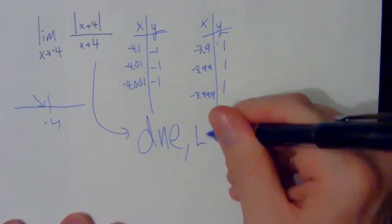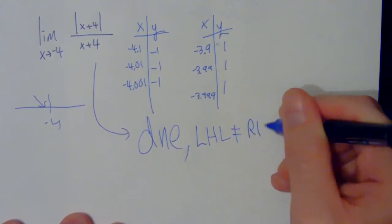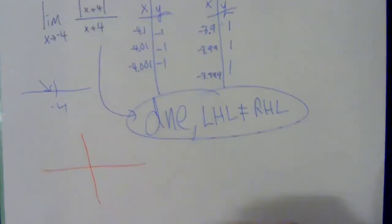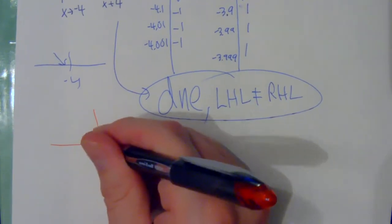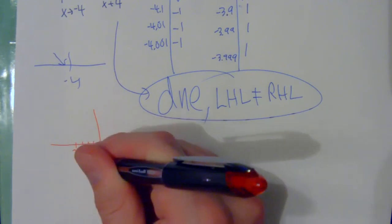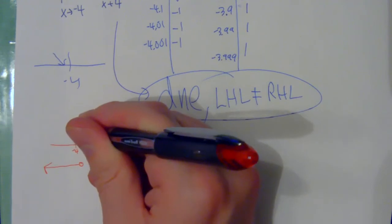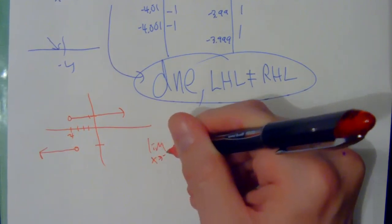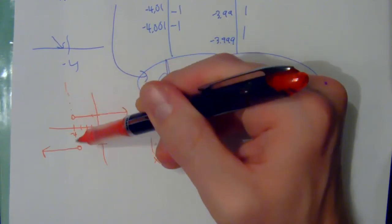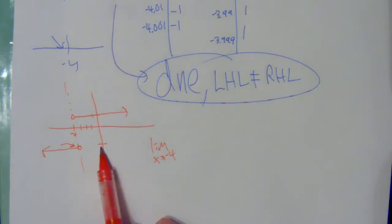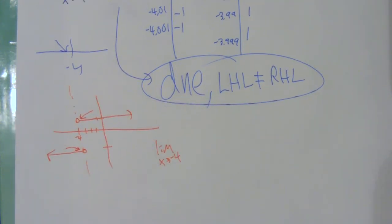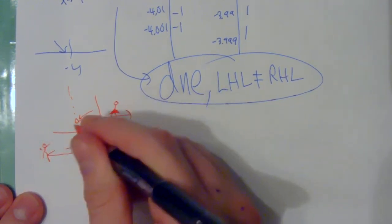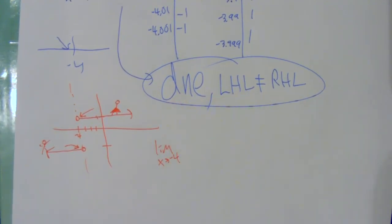Anytime a limit doesn't exist, we're going to say why: the left-hand limit is not equal to the right-hand limit. On the graph, negative 4 is here — the graph approaches negative 1 from the left side and positive 1 from the right side. You're not converging on the same value — like two groups of people arriving at two different picnic tables — so that limit does not exist.